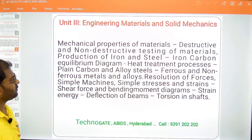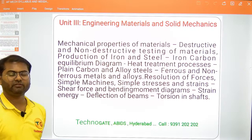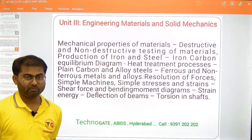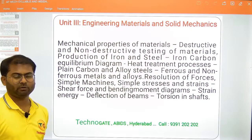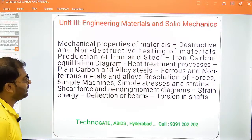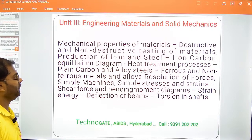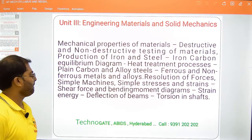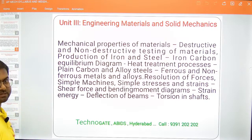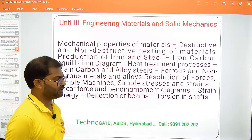Unit 3 covers mechanical properties of materials, destructive and non-destructive testing, production of iron and steel. When you put carbon in iron you get steel, with properties varying based on carbon content. Topics include iron-carbon diagrams, heat treatment processes, plain carbon and alloy steels, ferrous and non-ferrous materials and alloys, resolution of forces, simple machines, simple stresses and strains, shear force and bending moment diagrams, strain energy, deflection, beams, and torsion.